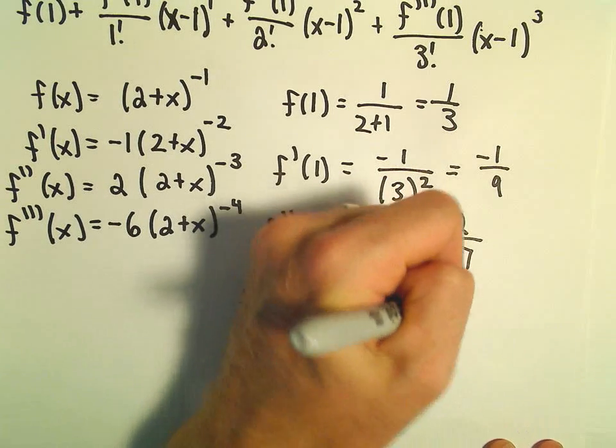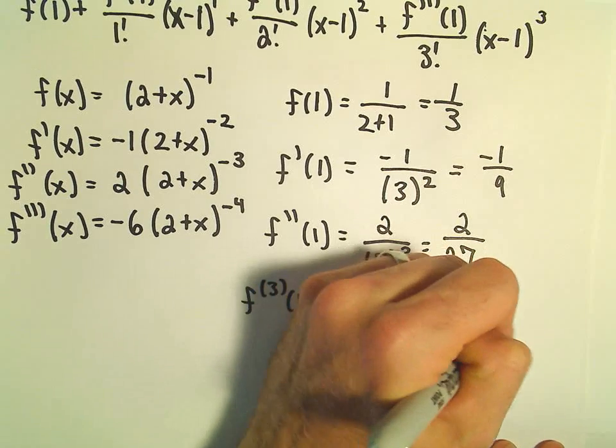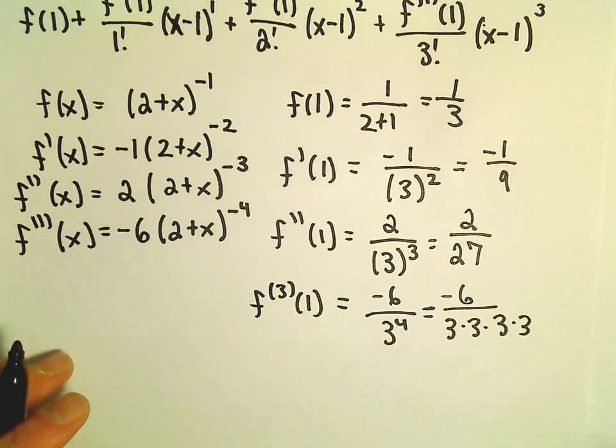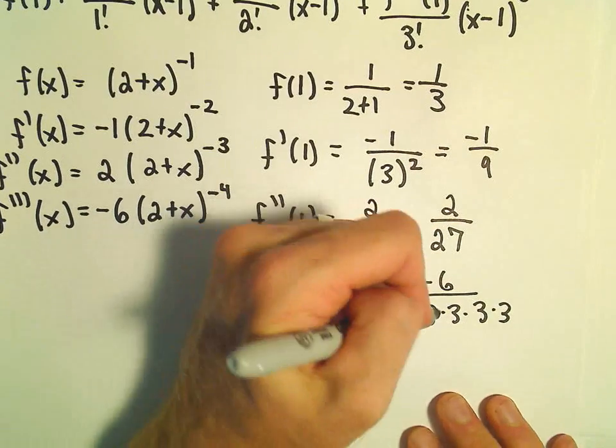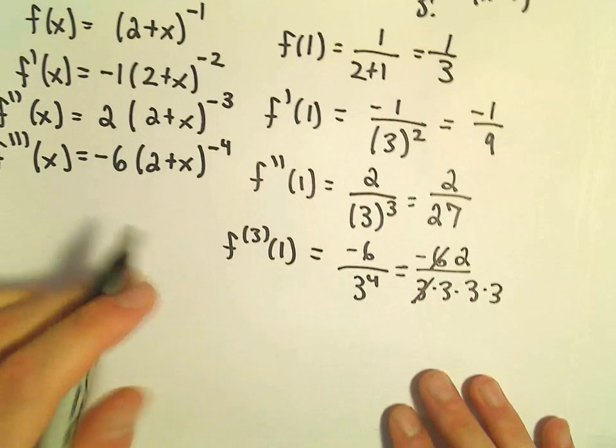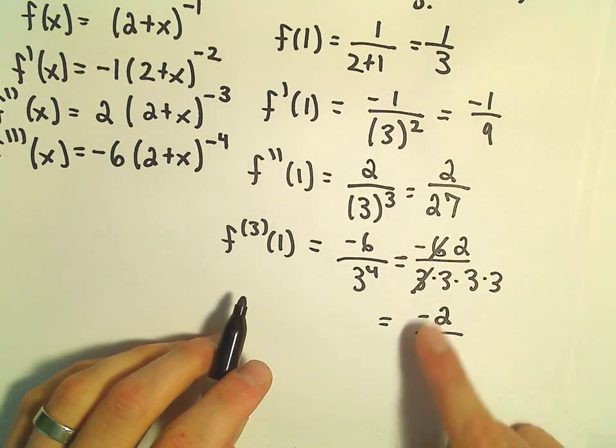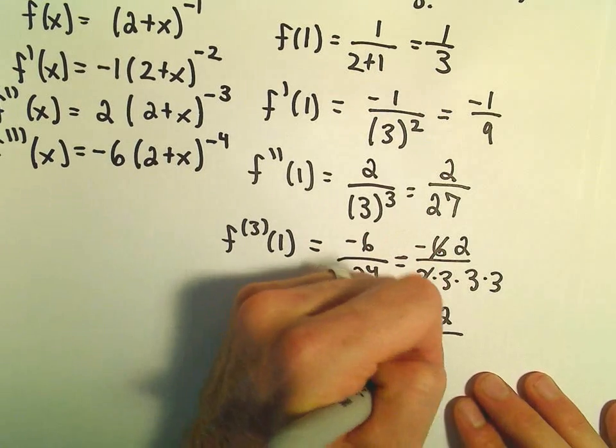I'm going to go ahead and simplify this. So that's negative 6 times 3 times 3 times 3 times 3. Let's see, we could get rid of one of the 3's, so 3 goes into 6 twice. So it looks like we'll be left with negative 2 over, so 3 cubed is going to be 27.